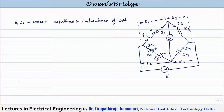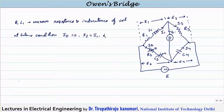First we will try to derive the phasor diagram, and once the phasor diagram is over, then we will derive the balance equations. We know that at balance condition the current passing through the detector — ID — will be equal to zero. So obviously I3 will be equal to I1 and the value of I4 will be equal to I2.